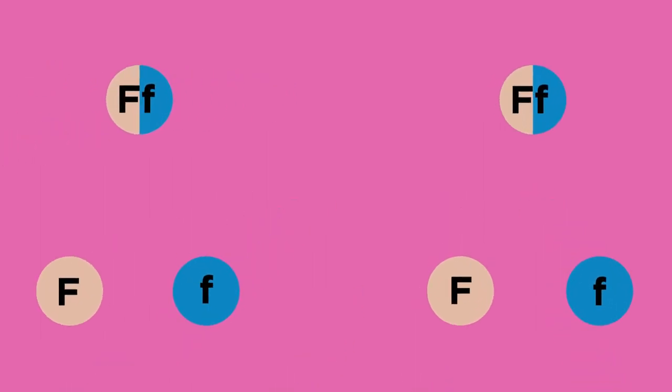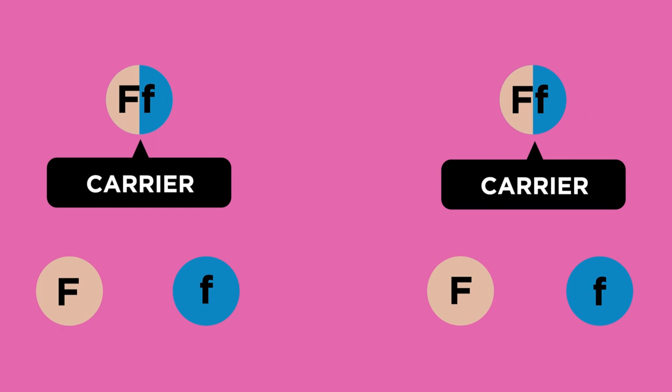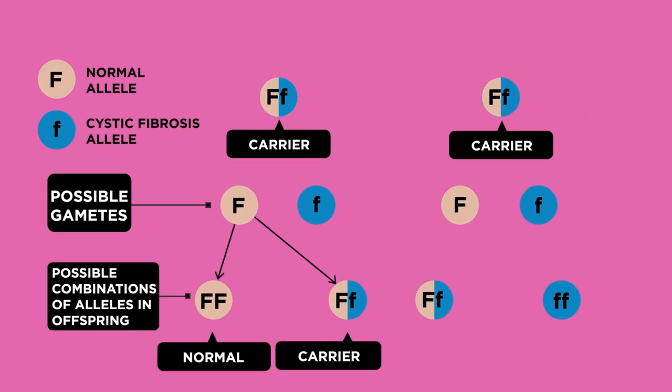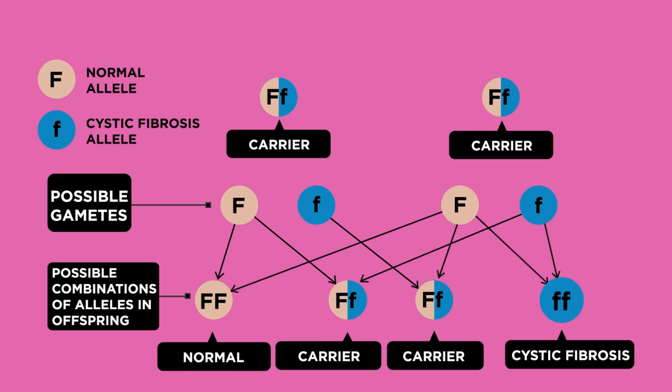To have cystic fibrosis you have to inherit two recessive alleles. The parents in the diagram are both carriers of the recessive allele little f. They do not have the disorder themselves but they could both pass the recessive allele to their children.